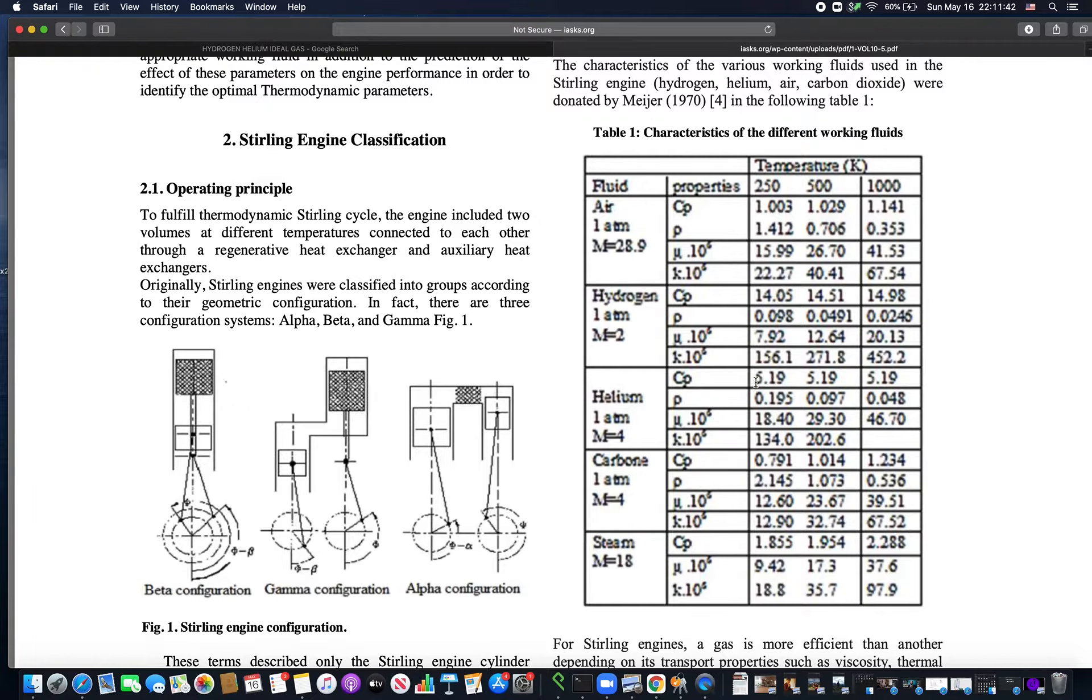You notice that helium can absorb about three times less heat for the same molar capacity, so it's not as good at transmitting heat throughout the system. So having more hydrogen would transmit heat better.